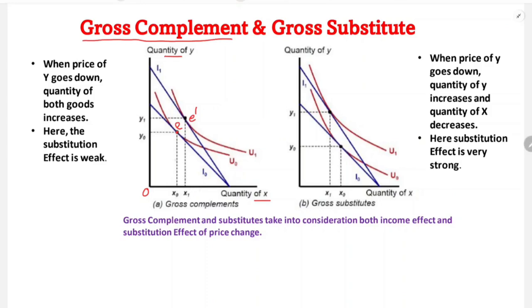At the new equilibrium E-dash, the quantity of good X increases from X0 to X1, and the quantity of good Y increases from Y0 to Y1. So when the price of Y goes down, the quantity of both goods increases. The consumer reaches a higher satisfaction level. The substitution effect here is weak — we have to increase the quantity of both X and Y to achieve higher satisfaction.